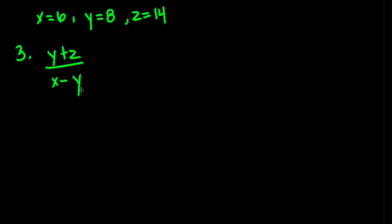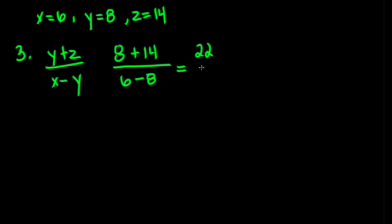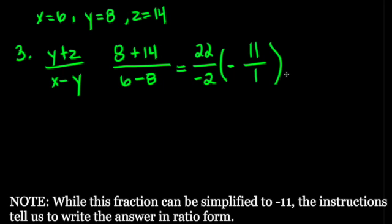Let's try this again with some different numbers. On our numerator we have 8 plus 14, divided by 6 minus 8. We can first simplify: 8 plus 14 equals 22, and 6 minus 8 equals negative 2. Let's ignore the negative sign for a moment — we can divide both numbers by 2. 22 divided by 2 is 11, and 2 divided by 2 is 1. Now adding back the negative sign — if either the numerator or the denominator is negative, the entire fraction is negative. So our final answer is negative 11 to 1.